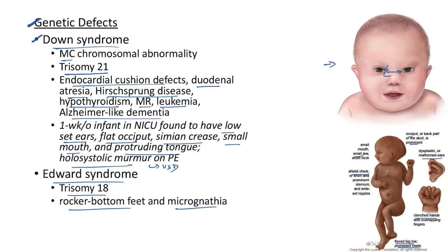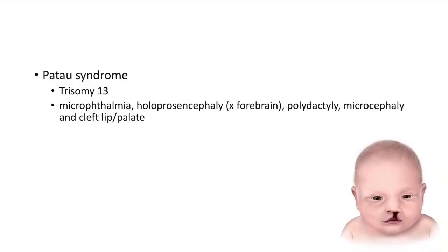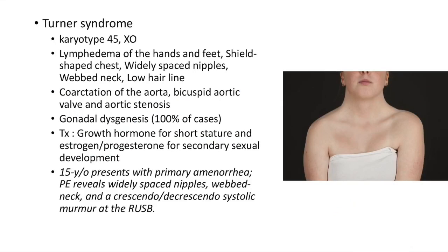Patau syndrome is due to trisomy 13. The features include microphthalmia, holoprosencephaly (failure of development of forebrain), polydactyly, microcephaly, and cleft lip or cleft palate. This picture shows a case of Patau syndrome.